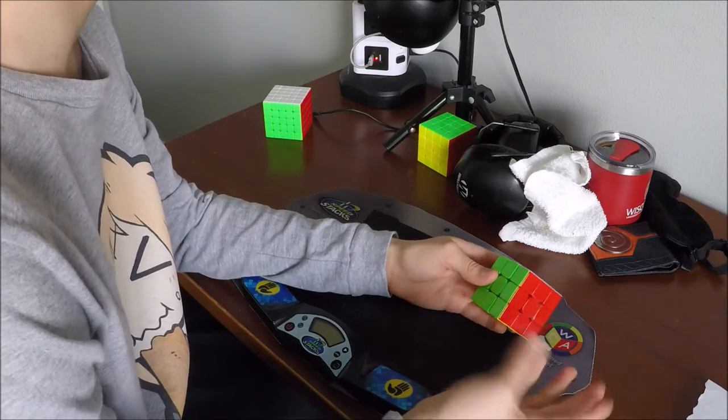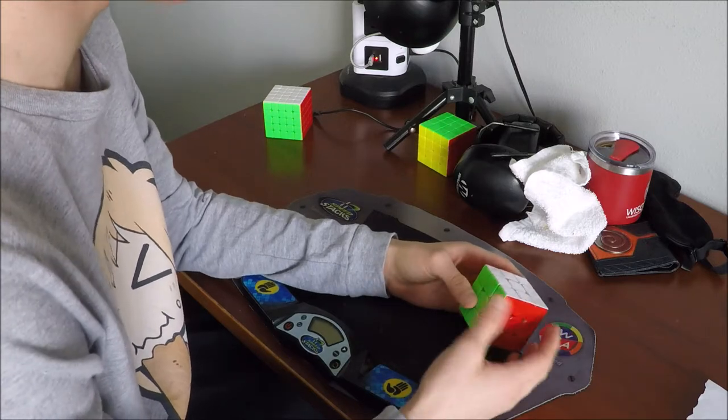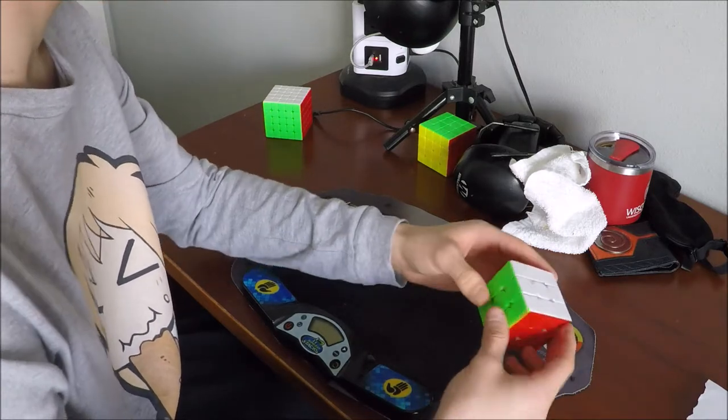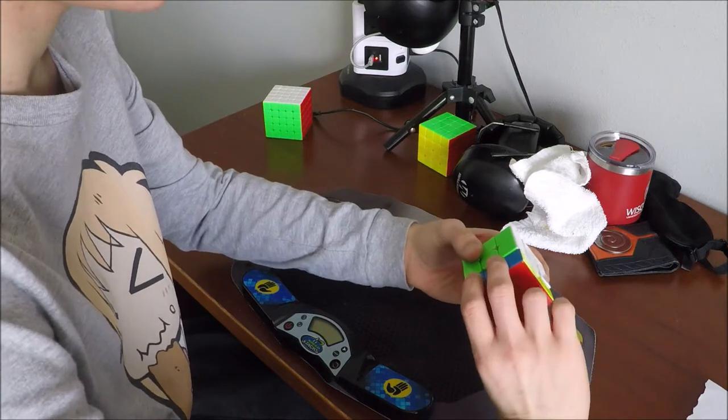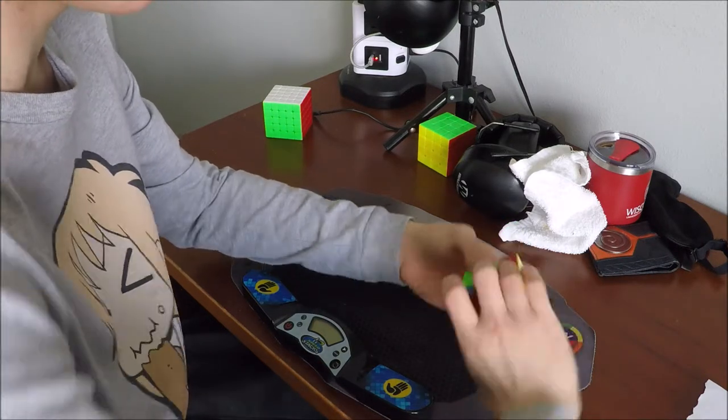I'm going to be showing you 3 corner cases and 3 edge cases for UF and UFR where it can be used, and so the finger trick is essentially when your hand is in the R2 position, you can do a U with your ring finger like that.